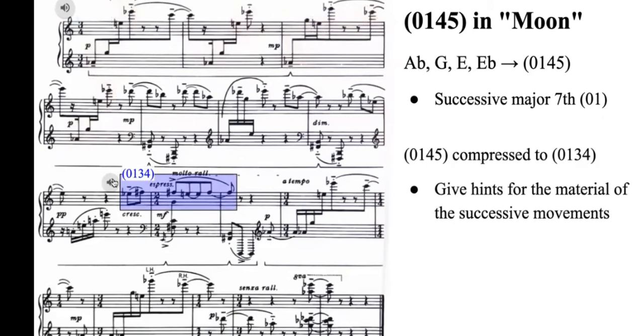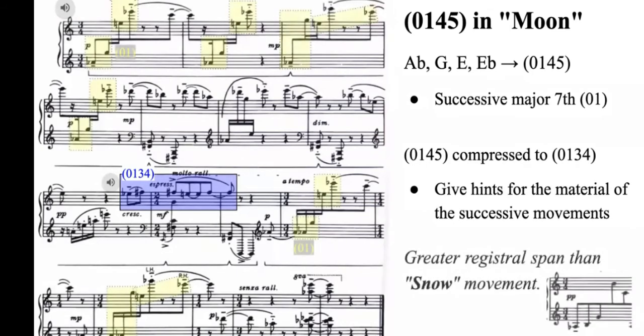However, it was soon replaced by the opening figure. In general, the complete 0145 is presented in the second movement as an expanded major seventh form, which has a greater registral span than its counterparts in the previous movement of Snow.